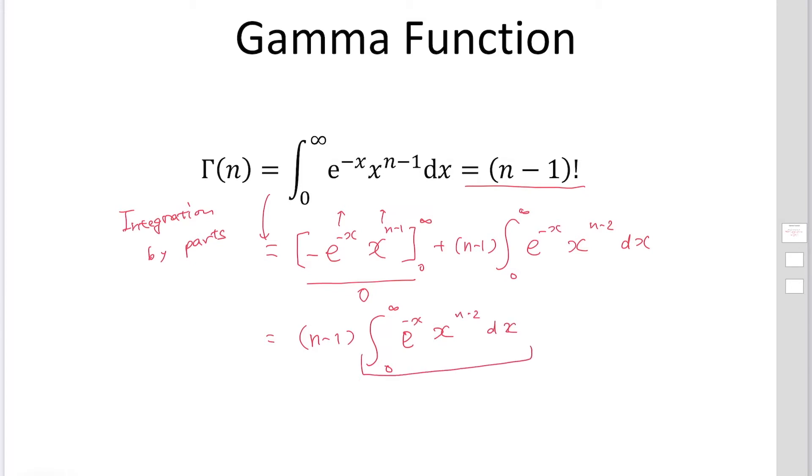So if you look at this part, by changing n to n-1, this is exactly equal to gamma n-1. This becomes n-1 times gamma n-1.